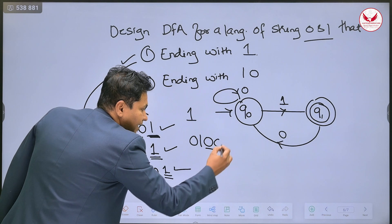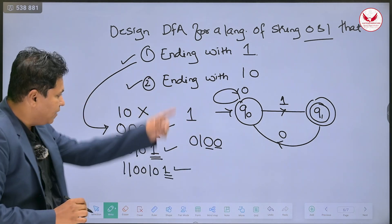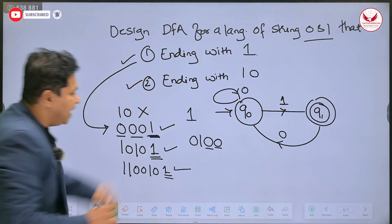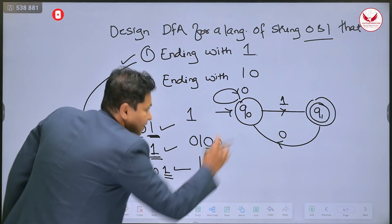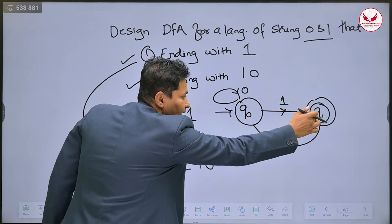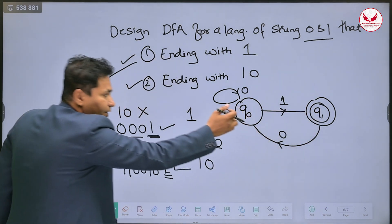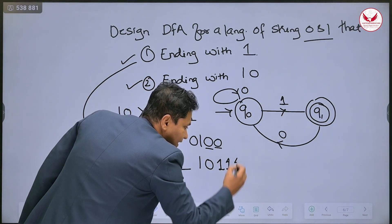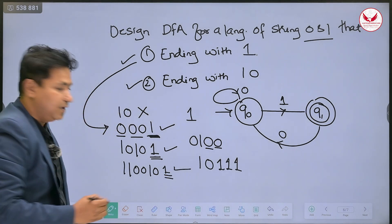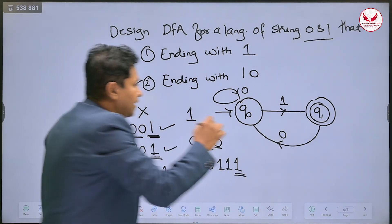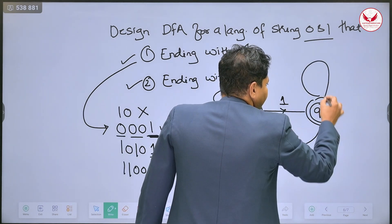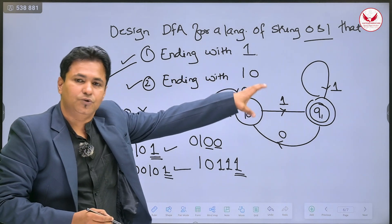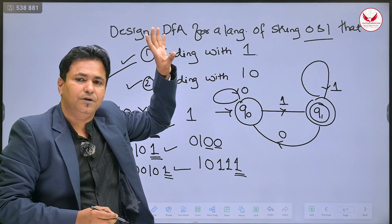It can have multiple 0s as well, so you revert back to q0 state. After processing 1 from q0 to q1, and then processing 0 in q1, it returns back to q0 state. After that it may have multiple 1s again — the string is ending with 1. In q1 state, the occurrences of 1 should remain in the same state, that is q1.